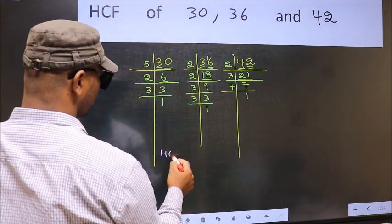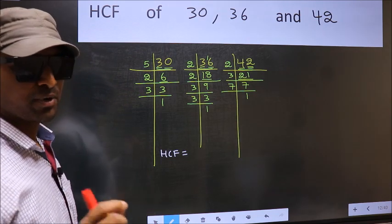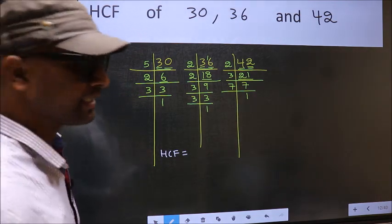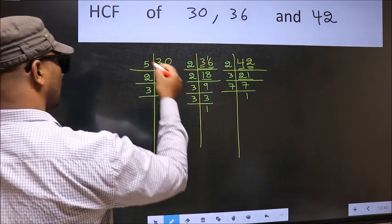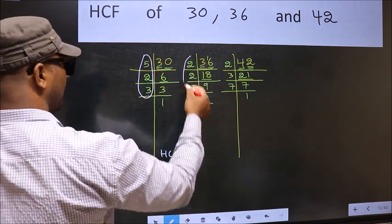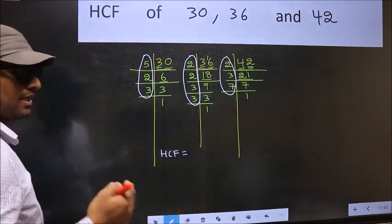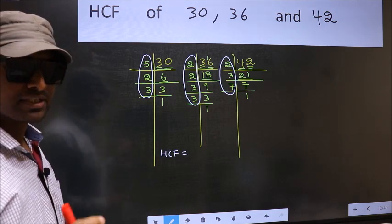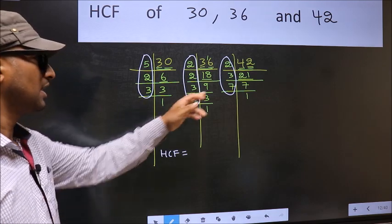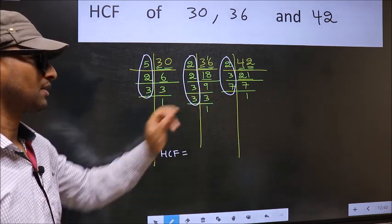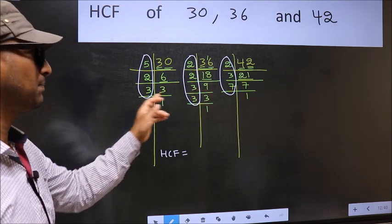So our HCF is, HCF is the product of numbers which should be present in these 3 places. That is here and here and also here. I repeat, HCF is the product of numbers which should be present in these 3 places.